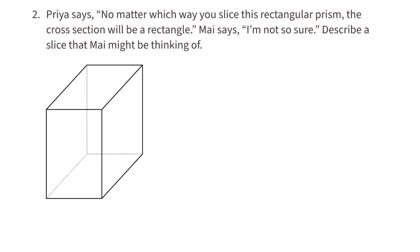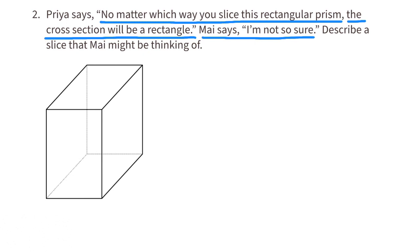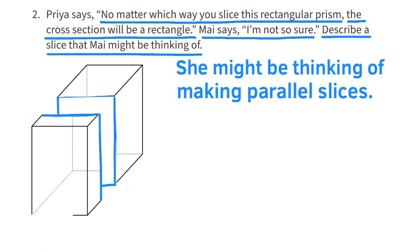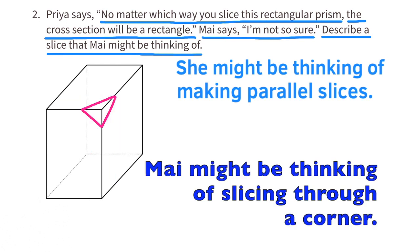Problem number 2. Priya says no matter which way you slice this rectangular prism, the cross section will be a rectangle. May says she's not so sure. Describe a slice that May might be thinking of. May might be thinking of making parallel slices, which do give rectangles, but she might also be thinking about slicing off a corner, where the cross section is in the shape of a triangle rather than a rectangle.